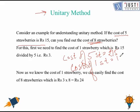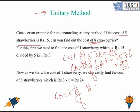The cost of 1 strawberry is 15 divided by 5, which is rupees 3. Now we know the cost of 1 strawberry is 3 rupees. So the cost of 8 strawberries would be 8 times 3, which is rupees 24. So the answer is 24.